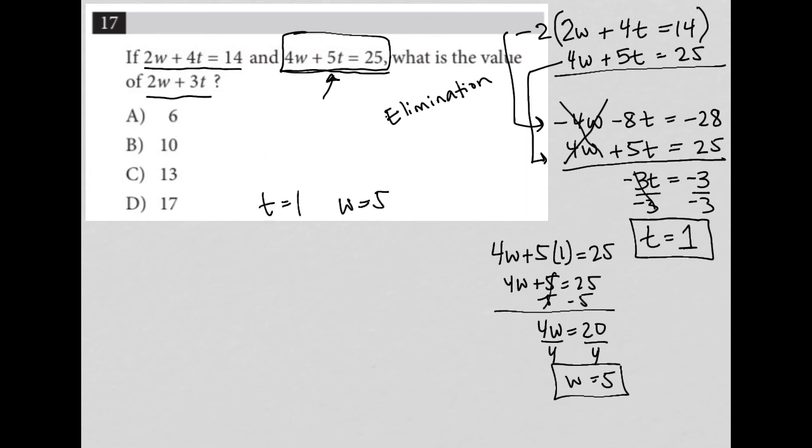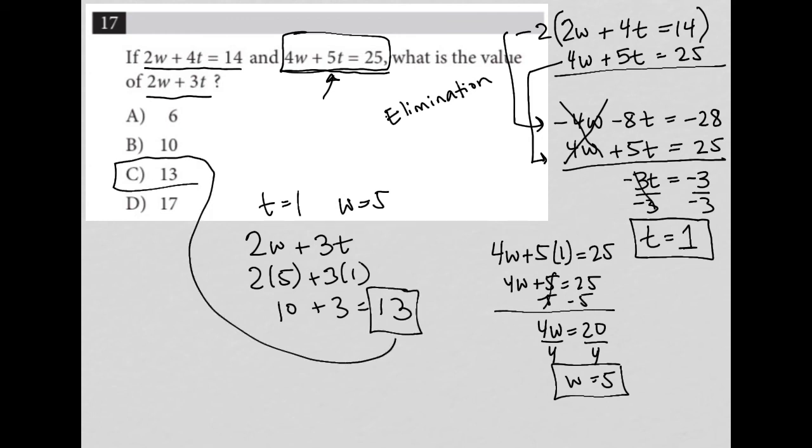The question wants me to figure out the value of 2w plus 3t. So I just substitute. So it becomes 2 times 5 plus 3 times 1, which is 10 plus 3, which equals 13. And therefore, the correct answer here is choice C.